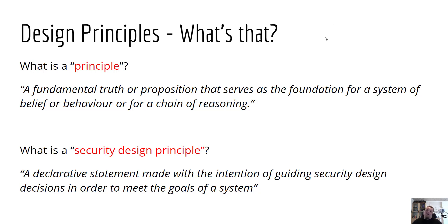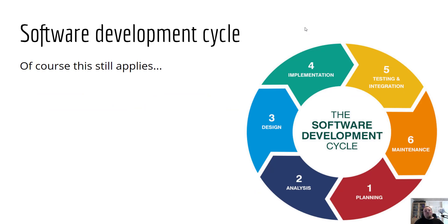So let's talk about 10 different design principles today. First, I'd like to show you this software development cycle. There are many different kinds — iterative, waterfall, different phases — but it doesn't really matter which one you're using. They all consist of the same steps. When you're making decisions about how to implement security and which software design principles to choose, it is in the first step — planning and analysis — that you should prove you've chosen the right principles. Design, implementation, testing, integration, and maintenance I'll cover in a future video.